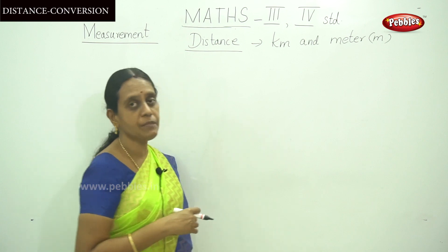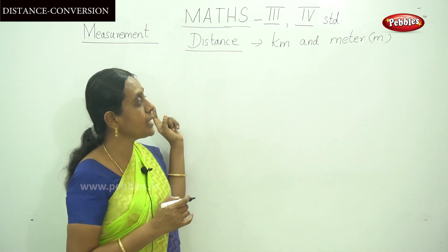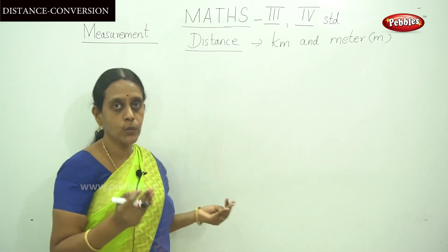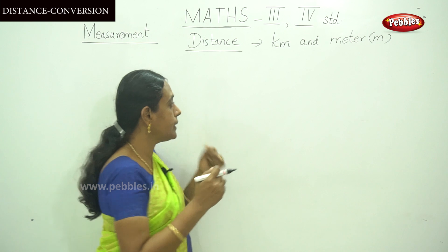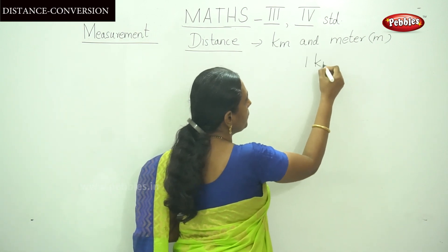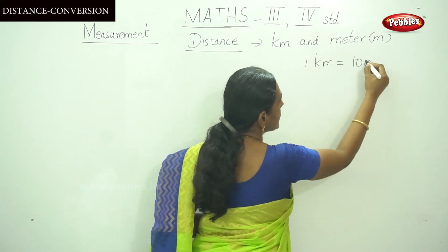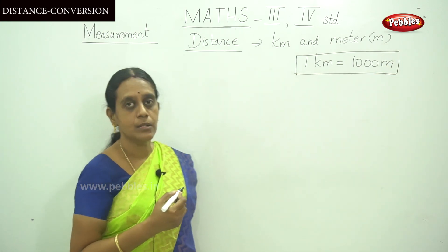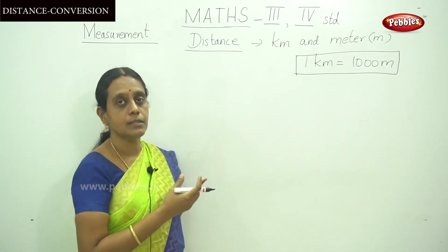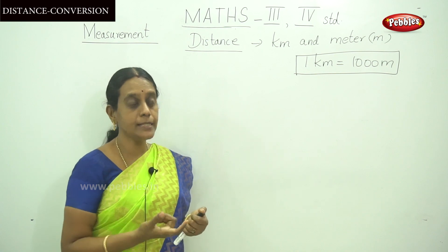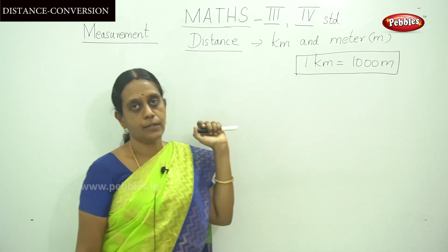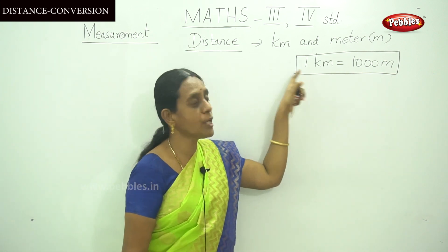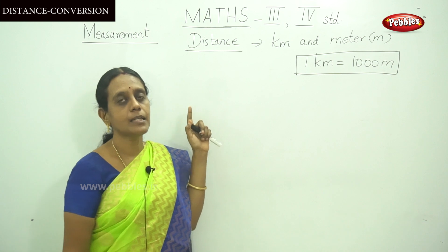For example, the distance between two cities. The unit table is: 1 kilometer is equal to 1000 meters. Kilometer is the bigger unit and meter is the smaller unit. So if we convert from kilometer to meter, you have to multiply the number by 1000. Similarly, when converting meter into kilometer, you should divide the given number by 1000.